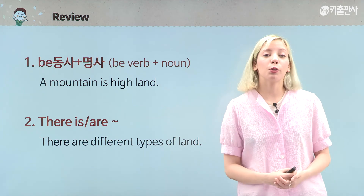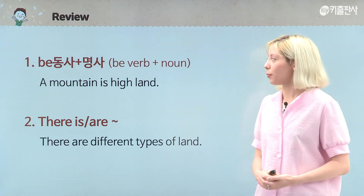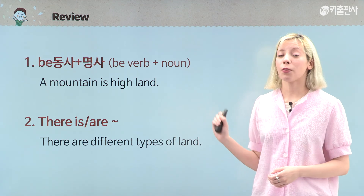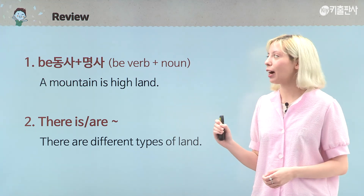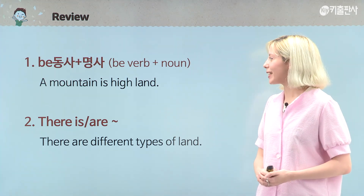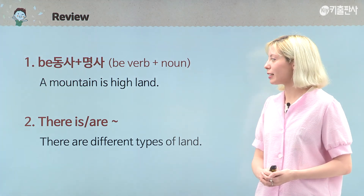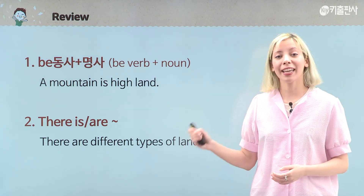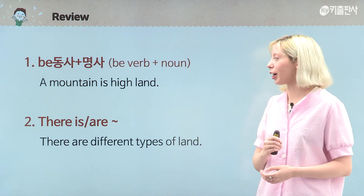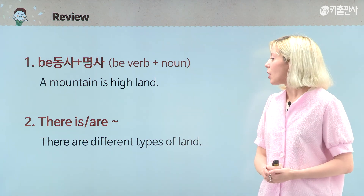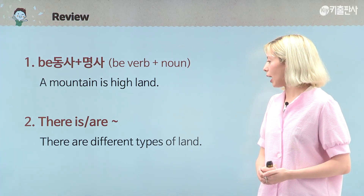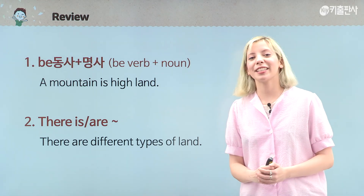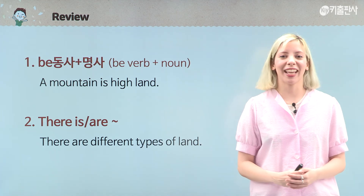So let's review what we've learned today. First, we learned how to use the be verb followed by a noun: A mountain is high land. We also learned how to use there is and there are: There are different types of land. And that's all for today. I'll see you next time. Goodbye!